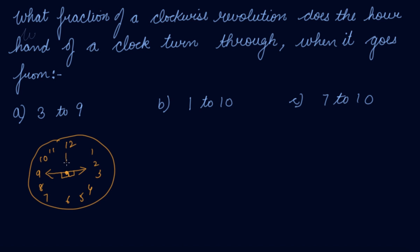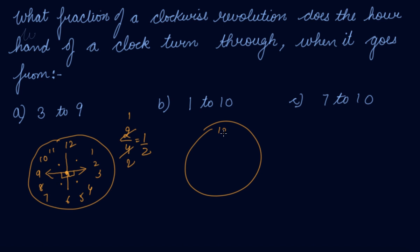We divide the clock into four equal parts. From 3 to 9 clockwise, the hand covers three out of four parts of the clock. So three-fourths is the fraction.